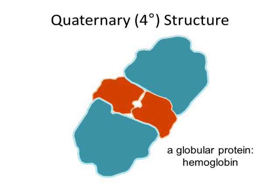The two main shapes we typically talk about for quaternary structure proteins are globular proteins and filamentous or fibrous proteins. Collagen would be an example of a fibrous protein because it looks like an extended thread, whereas hemoglobin is a good example of a globular protein.